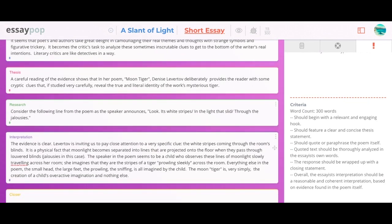So let's get into it. The interpretation in this situation is going to be me analyzing the lines from the poem that I put in my research. This is what I came up with: The evidence is clear. Levertov is inviting us to pay close attention to a very specific clue—the white stripes coming through the room's blinds. It is a physical fact that moonlight becomes separated into lines that are projected onto the floor when they pass through louvered blinds, jalousies in this case.